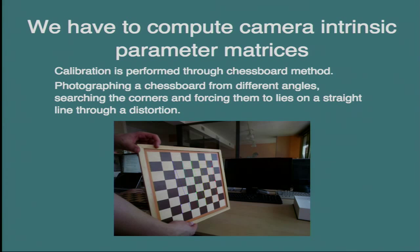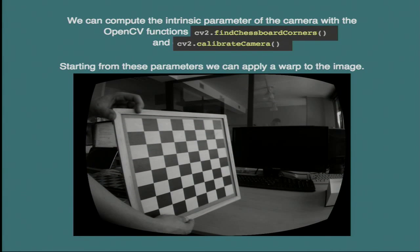This process is called camera calibration and it is performed through the chessboard method. We take pictures of a chessboard from different angles and find the corners of the chessboard using the Harris algorithm, for example. We find a distortion correction to obtain straight lines — we can see that in this photo the lines of the chessboard are slightly distorted and we have to correct this. This process is already implemented in OpenCV through the functions findChessboardCorners and calibrateCamera. Starting from these parameters, we can apply a transformation to the image, and the lines of the chessboard are now more straight.